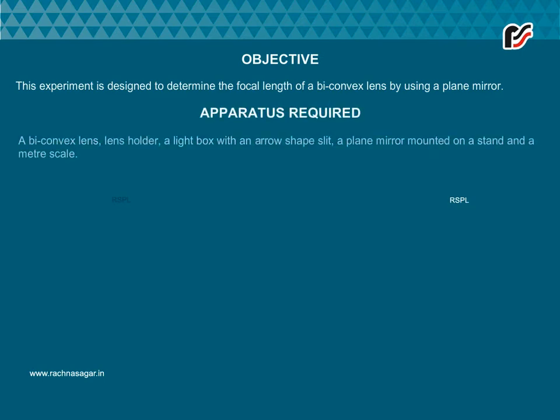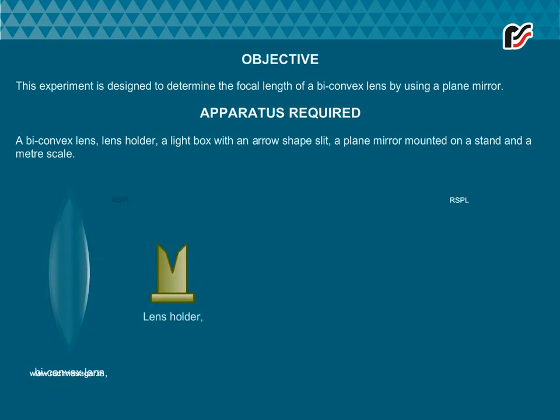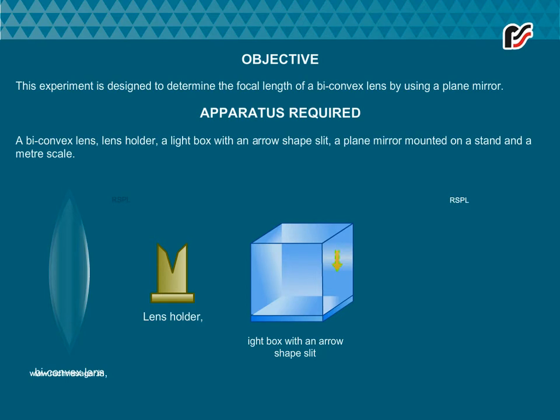Apparatus required. A biconvex lens, lens holder, a light box with an arrow-shaped slit, a plane mirror mounted on a stand, and a meter scale.